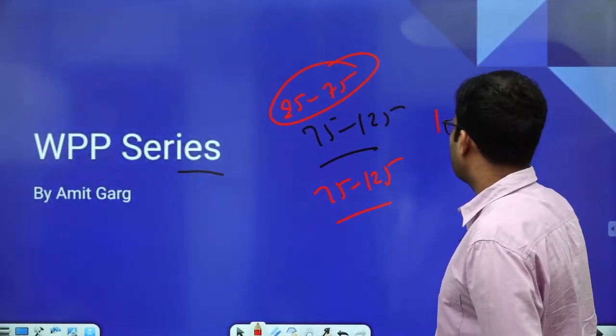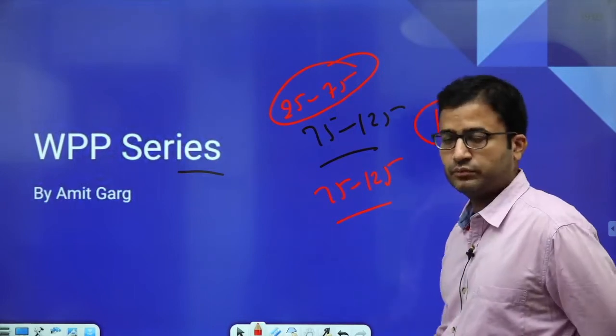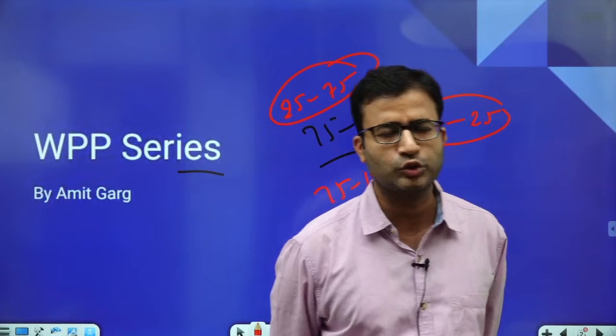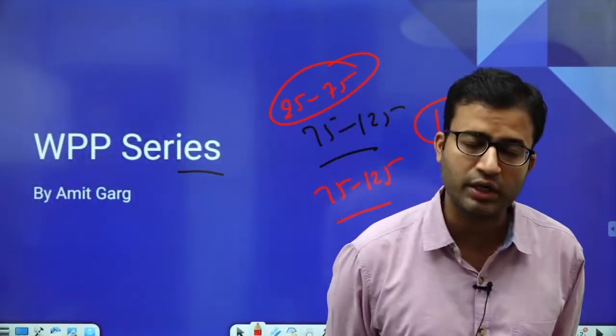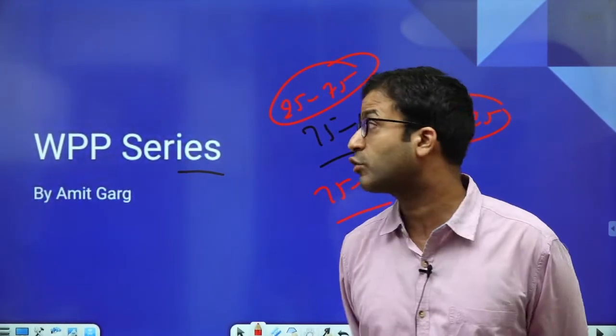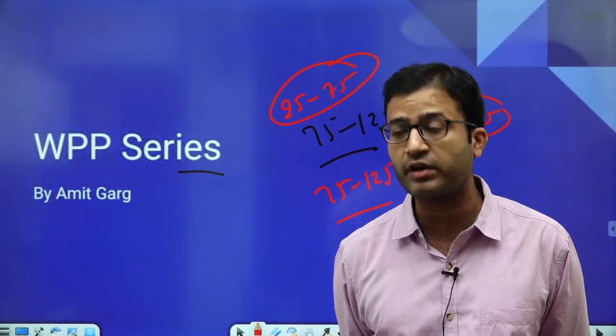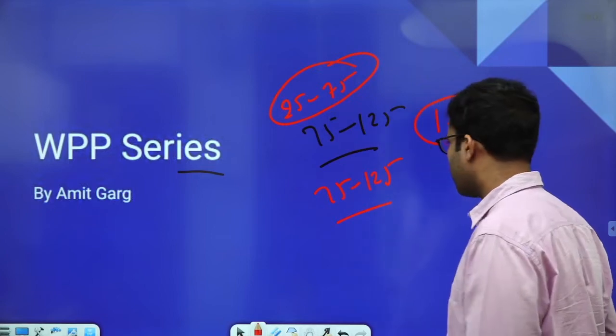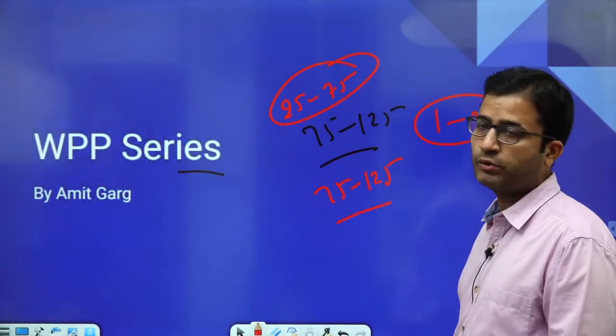And what I suggest you, 1 to 25 square, you have to memorize. 2 square, 3 square, 4 square, 5 square, 21 square, 22 square, up to 25 square, you memorize. Because these are going to help you in 25 to 75 and help you in 75 to 125. Okay, so we start our series without pen and paper.